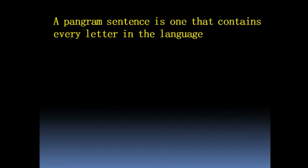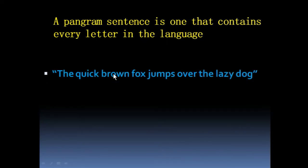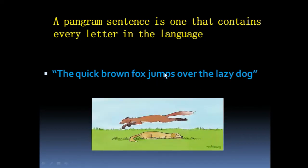The next interesting fact is about a pangram. A pangram is a sentence that contains all the letters of a specific language. For the English language, the famous example is: 'The quick brown fox jumps over the lazy dog.' This sentence contains every single letter of English — a, b, c, d, e, f, and so on — all letters are present here.